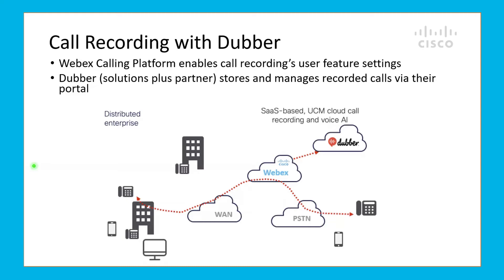So how does Dubber work in a Webex Calling environment? If a user is enabled for call recording within Control Hub, then when a call is made to or from that user, the call is forked to Dubber via an extended SIP invite message. In this way, Webex Calling partners have the option to meet customer requirements for business process, regulatory, or other standards compliance needed for recording calls.